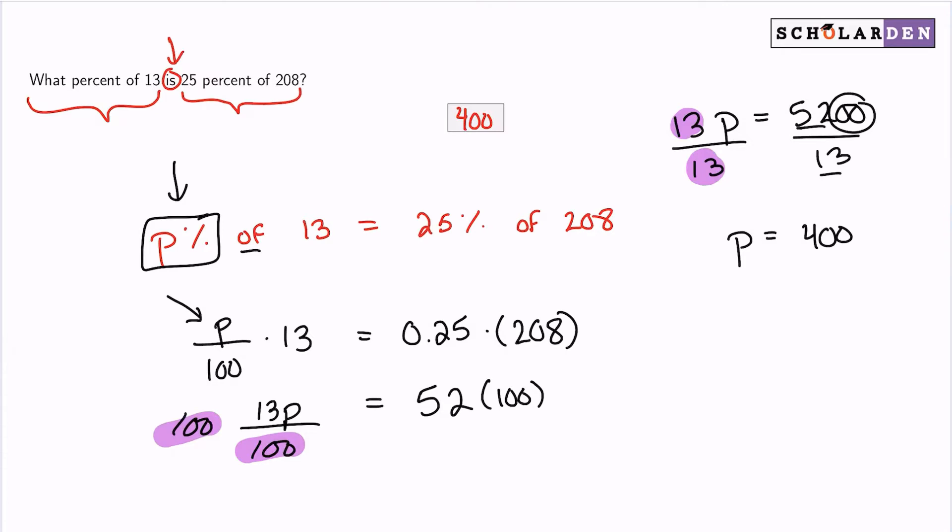And remember that P was a percent. So the answer is 400%. I hope this helps out everybody. If not, let us know. We're more than happy to help.